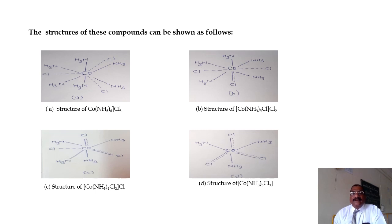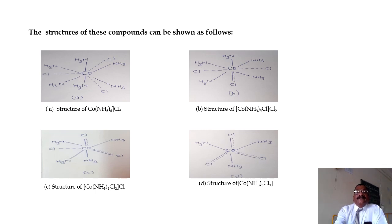For the fourth compound, Co(NH3)3Cl3: all three Cls can satisfy both primary and secondary valency, so all 3 Cls are shown by dotted as well as thick lines, and the 3 NH3 amine ligands show only secondary valency and are shown by thick lines only. Thus, Werner gives the idea of how to write the formula for a coordination compound, how to draw the structure, and how to show the attachment of ligands to the central metal atom — whether it satisfies primary or secondary valency.